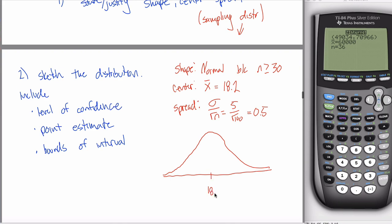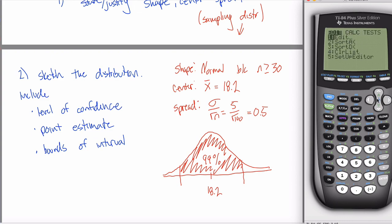So, when you're answering this question, you'll start with your normal distribution. Note that you're drawing it normal, because right above this, you said that the shape was normal. Then you're going to put in your point estimate, which is the center, 18.2. And then you want to include your level of confidence. In this case, it's 99%. And then the bounds of the interval. Well, I don't know the bounds of the interval. That's what your calculator tells you. Go over to the calculator.